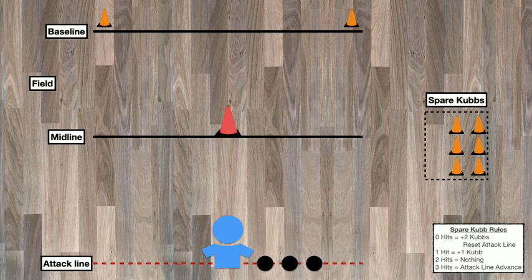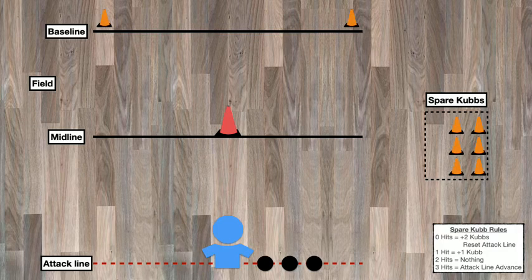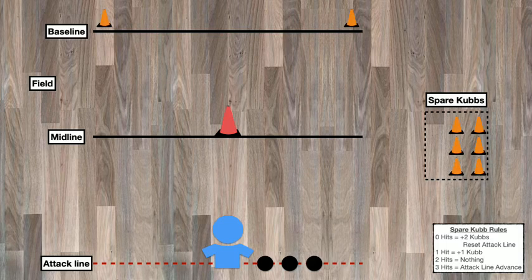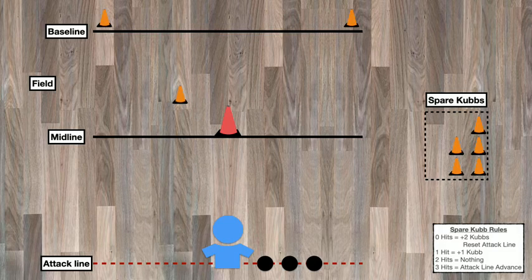But remember, before we begin this next round, we need to take a look off to the side at the spare Kubbs rules. Because one of those Kubbs was hit, now we need to add one Kubb additionally. So we take one Kubb from the spare Kubb area, and the player needs to toss it somewhere out into the field, the area between the baseline and the midline.